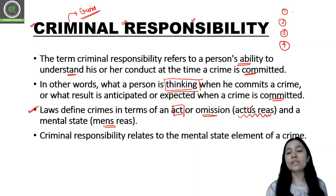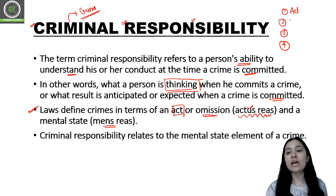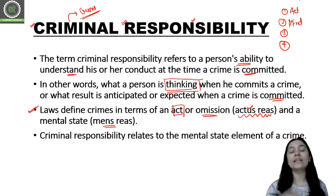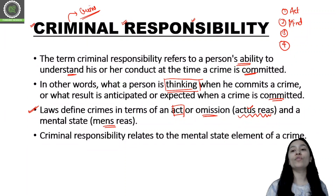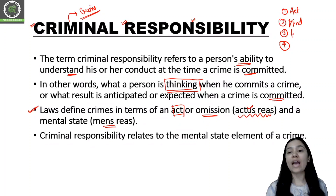The four elements of crime are: first, the act — that is actus reus; second, the mind — that is mens rea, meaning your mind is involved; third, injury; and fourth, the person. The person who has done the crime, if they have inflicted injury, and their mind was perfectly sound at the time — meaning they understood what they were doing and the consequences — then we have all four elements.